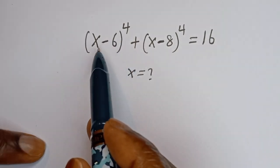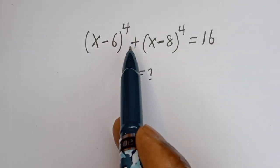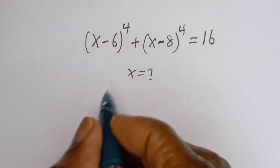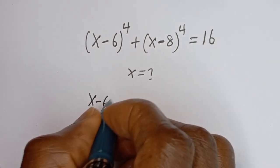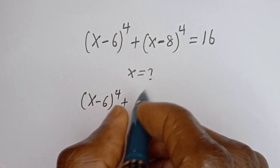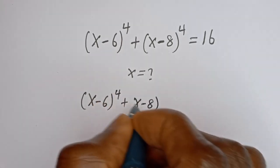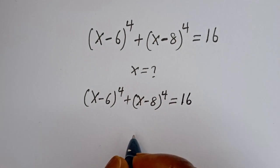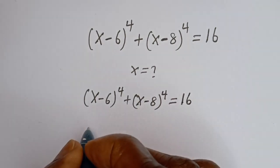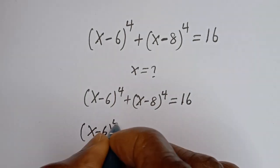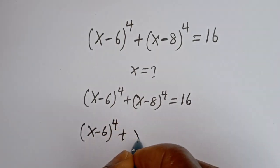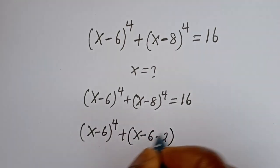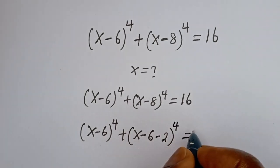Hello. How to solve for x in this equation: (x-6) to the power of 4 plus (x-8) to the power of 4 is equal to 16. From here we have (x-6)⁴ + (x-8)⁴ = 16. This can be rewritten as (x-6)⁴ plus (x-6-2) to the power of 4 is equal to 16.